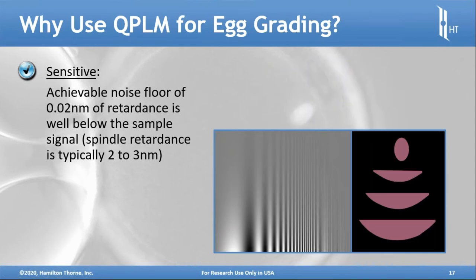It's sensitive down to 0.02 nanometers of retardance. Retardance can be defined as the way light passing through highly organized molecules is attenuated under different polarized states. The spindle — the microtubules containing the chromosomal complement inside an oocyte — are highly ordered molecularly and present a spindle retardance in a range of two to three nanometers typically, well above the noise floor of the tool.